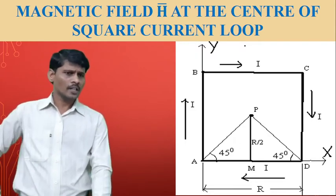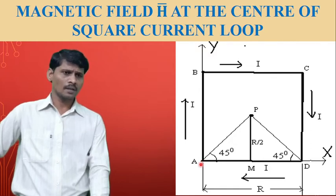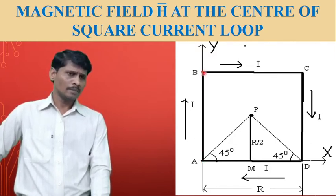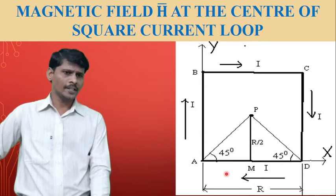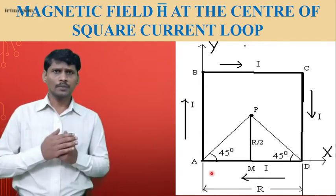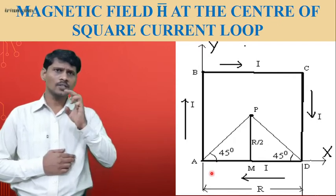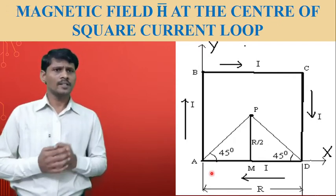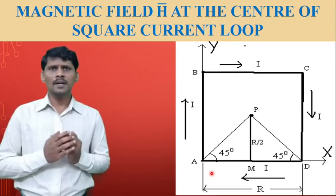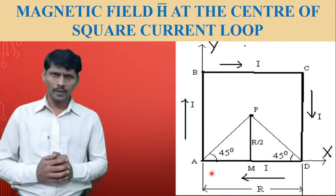Each side of the conductor has length capital R meters. So A to B, B to C, C to D, and D to A are each equal to capital R. These are finite conductors. Calculate the magnetic field intensity at the center of the square loop.